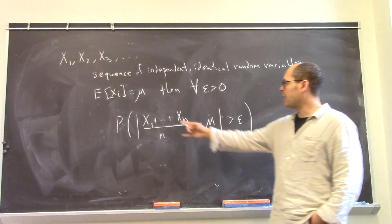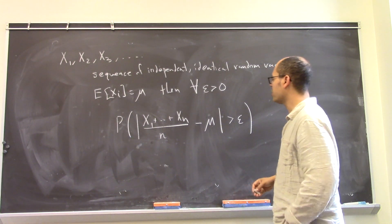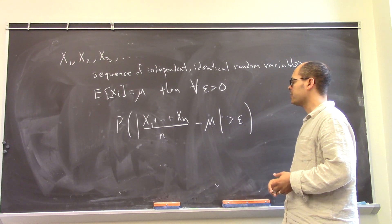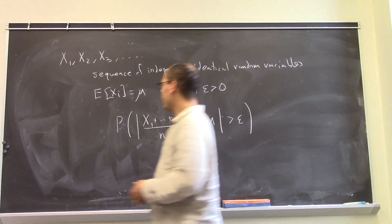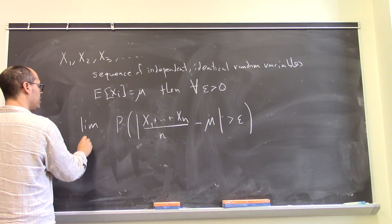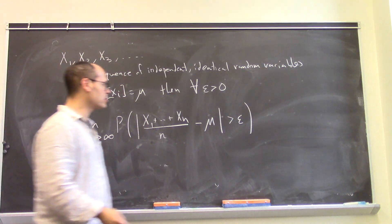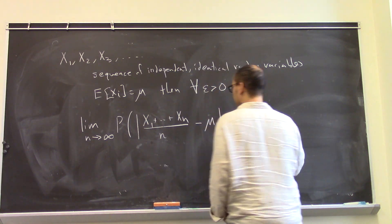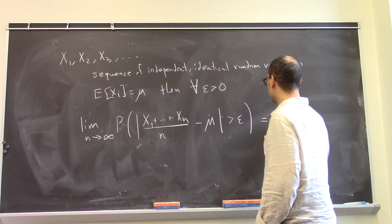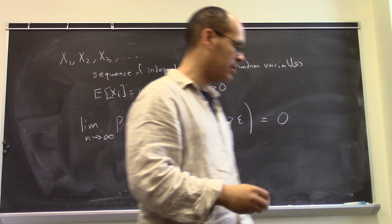We expect that this average value gets closer and closer to mu. So if I pick some epsilon, what's the probability that this quantity is actually bigger than epsilon? What the weak law of large numbers says is that as the number of observations goes to infinity, the probability that the sample average differs from the true mean goes to zero.